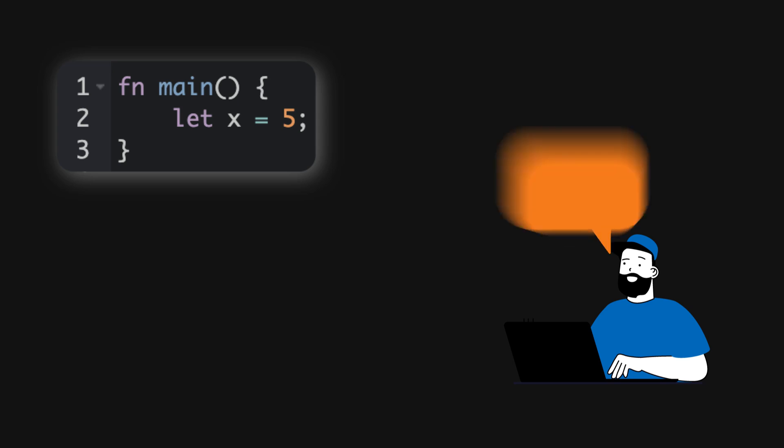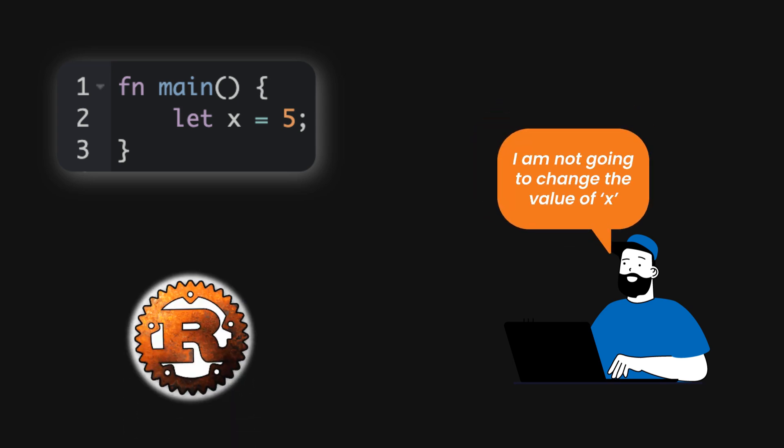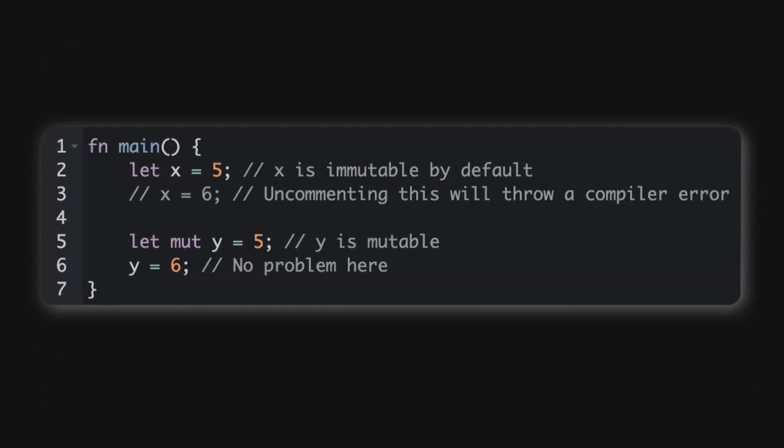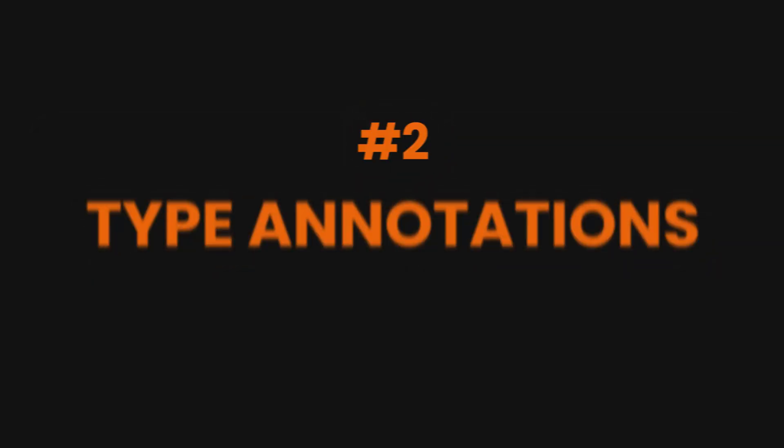When you make a variable immutable, you're telling Rust 'Hey, I'm not gonna touch this value again.' That allows Rust to optimize things behind the scenes. But if you really want to change it, just add the mut keyword. See that, let x equals 5 creates an immutable variable, and if you try to change x, Rust will actually stop you. But when you add mut, it's game on and you can update y without any issues.